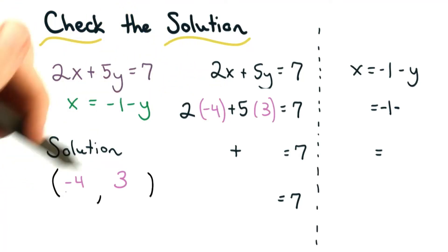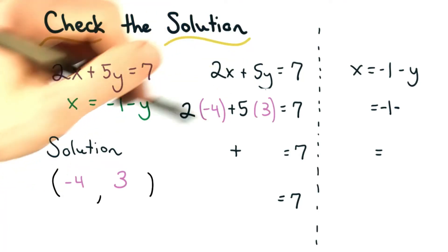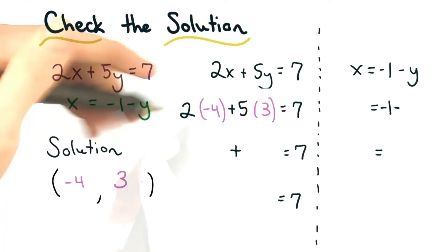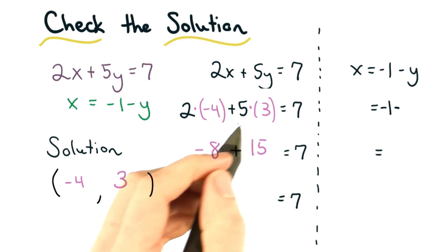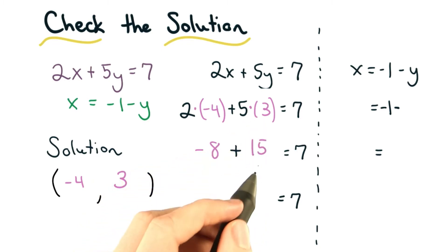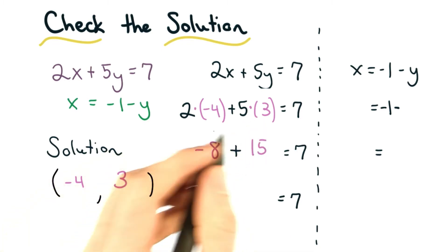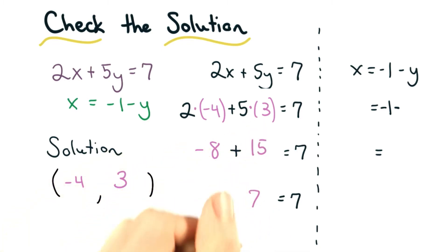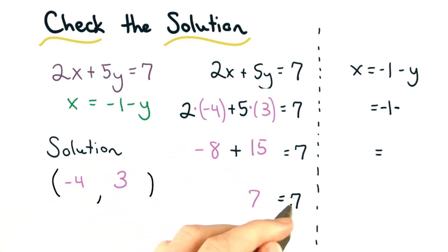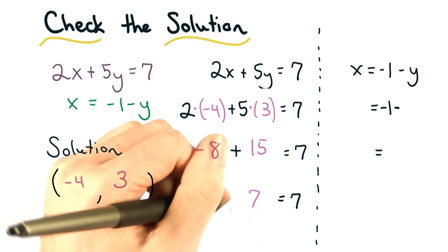We replace x with negative 4 and y with positive 3. 2 times negative 4 is negative 8, and 5 times 3 is 15. Adding these two numbers together, we get 7 is equal to 7. This is true.